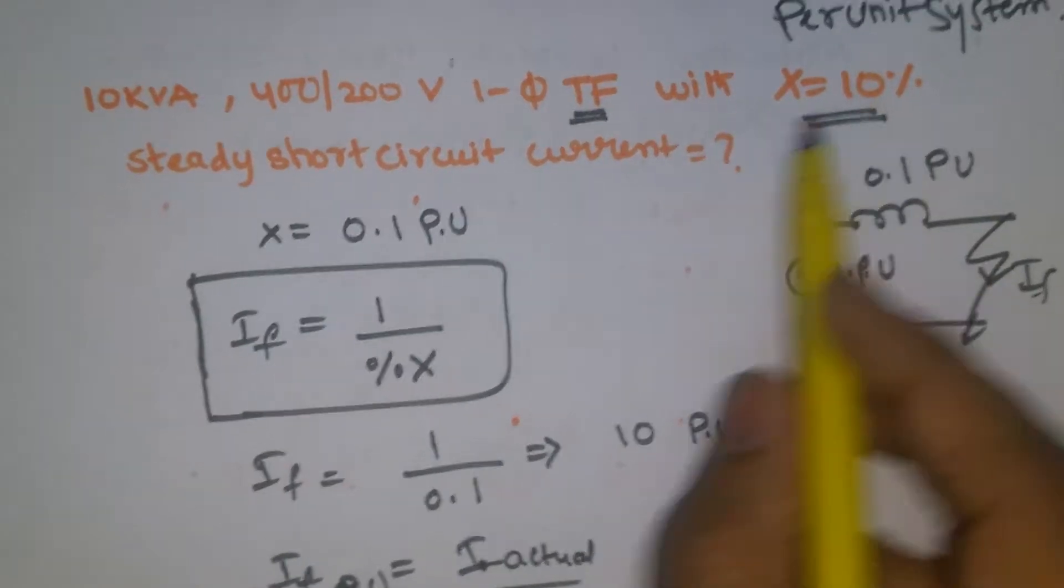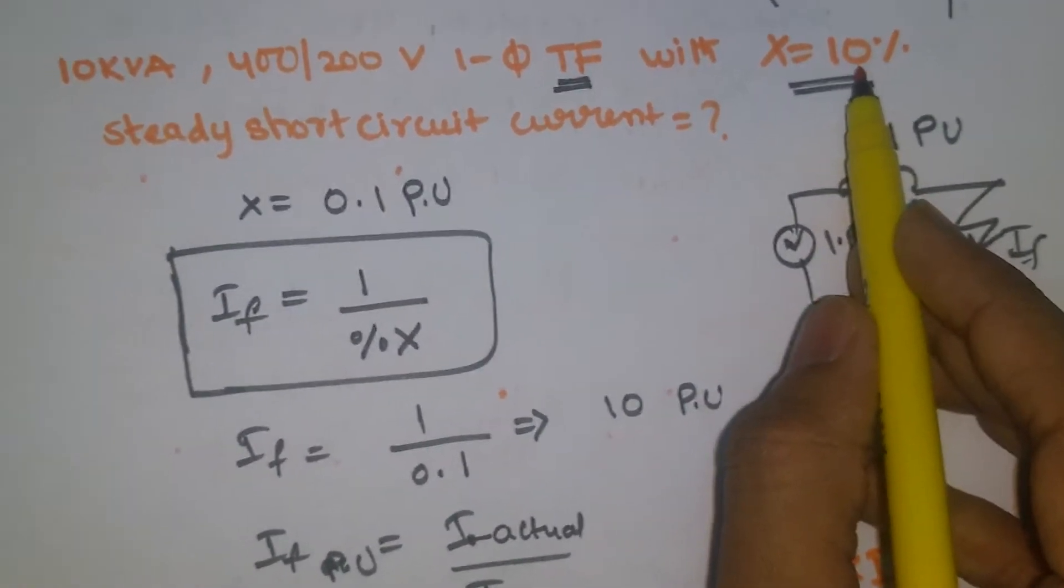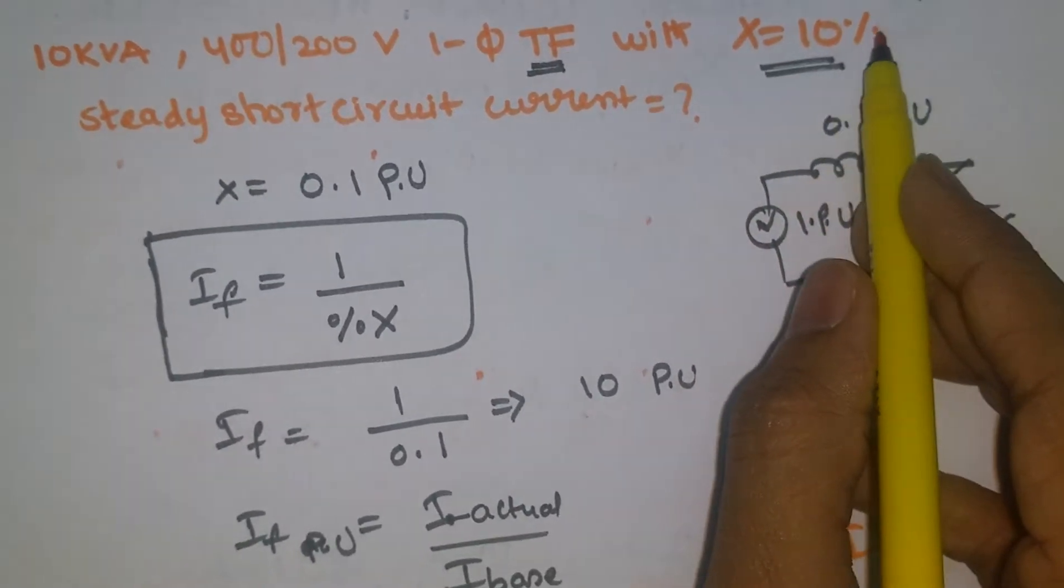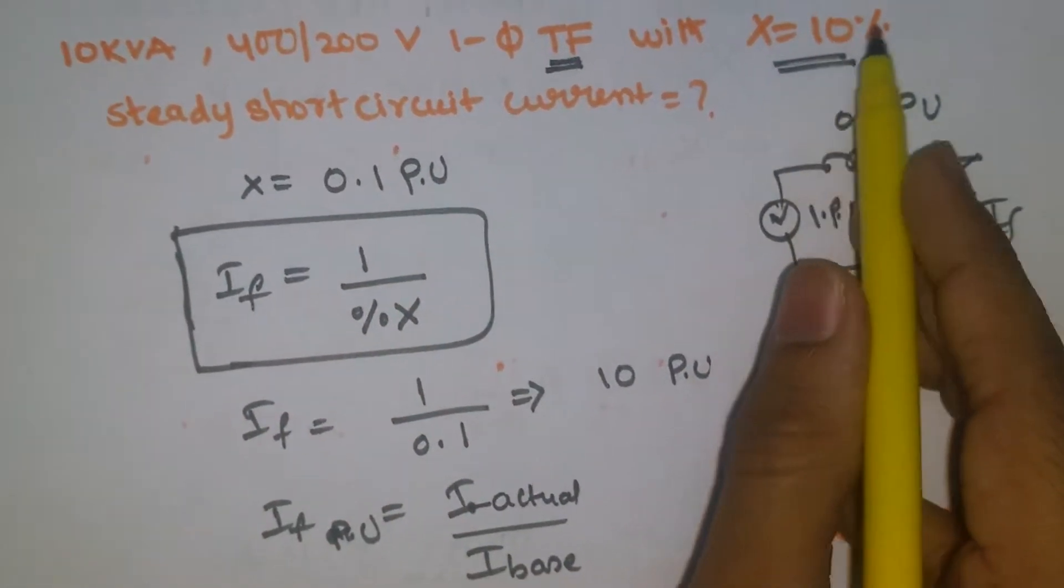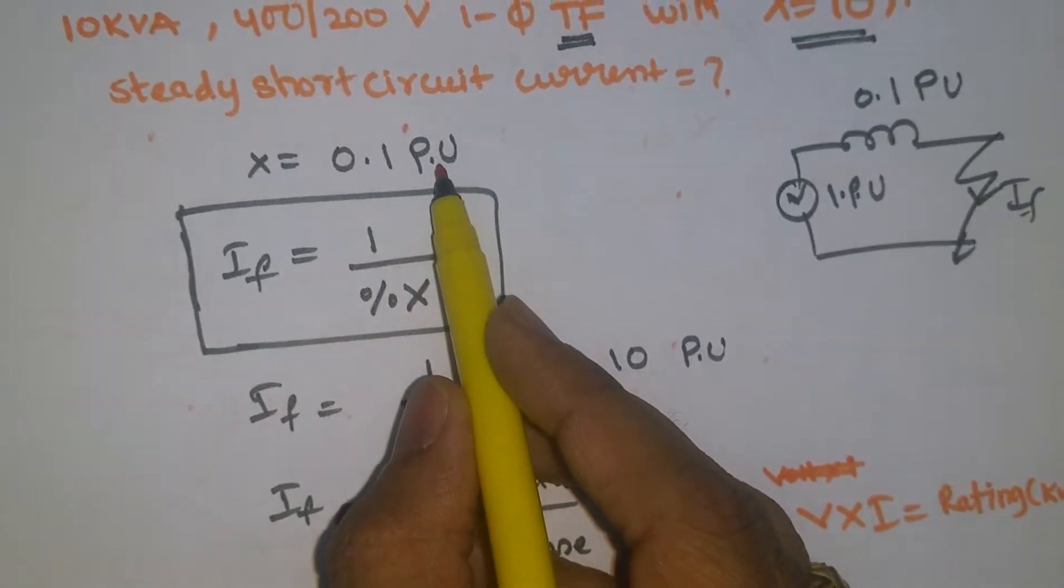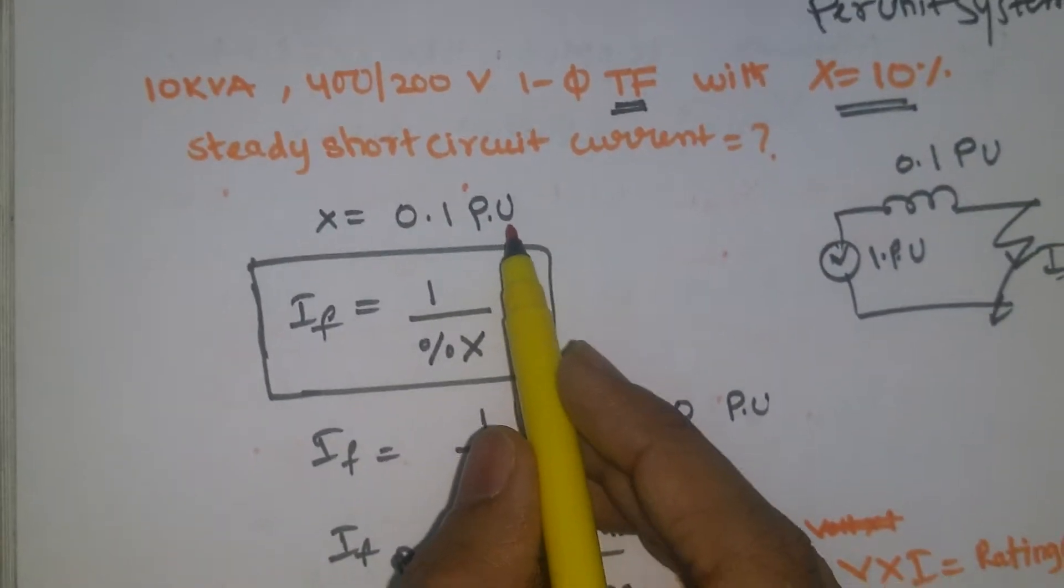We have a per unit impedance, X equal to 10%. I told you in per unit system we don't have units, so X is equal to 10%, which we'll convert as 0.1 per unit. So very simple.